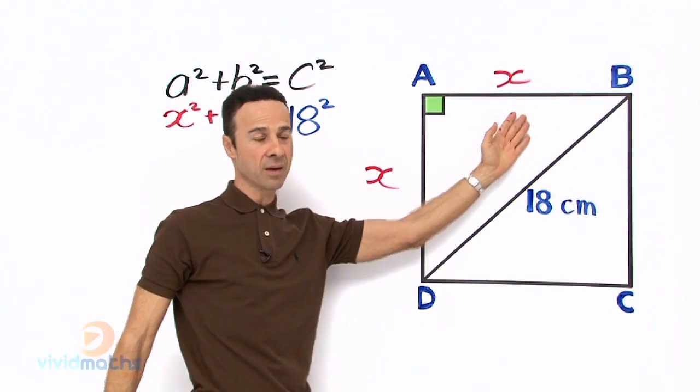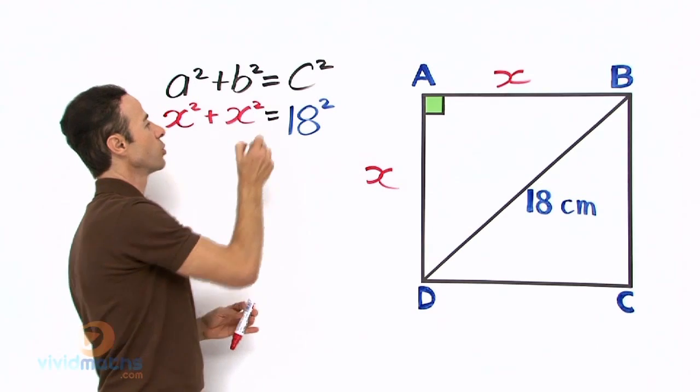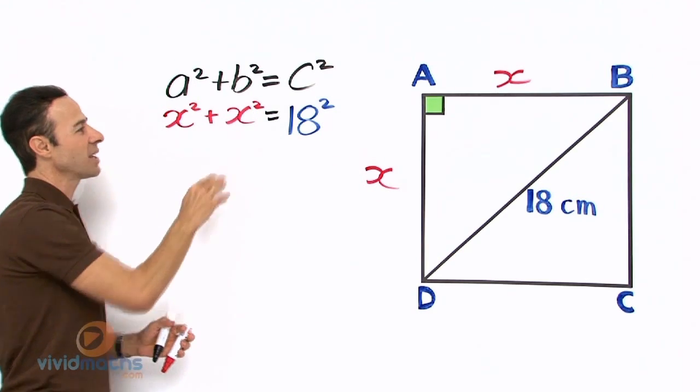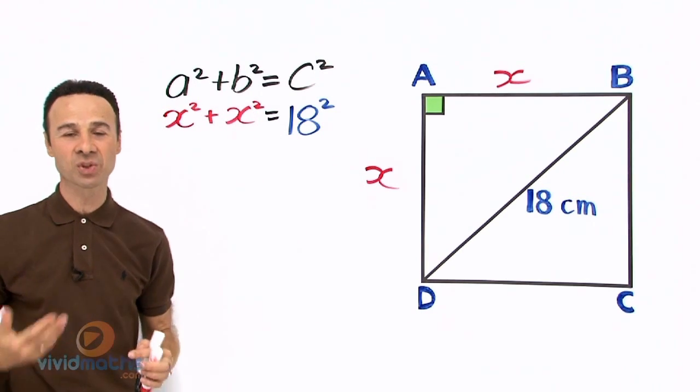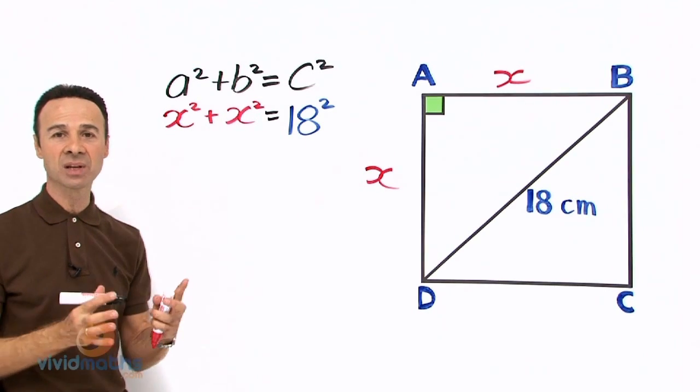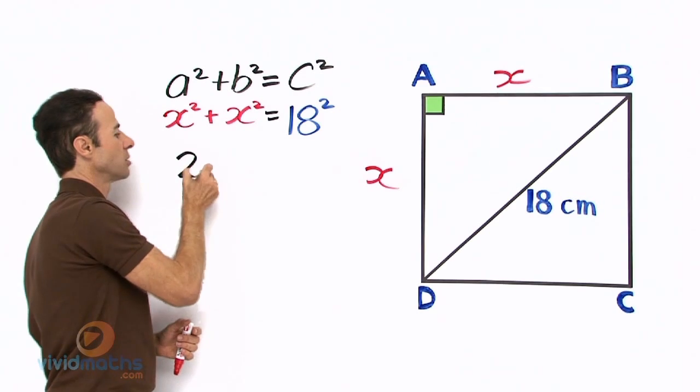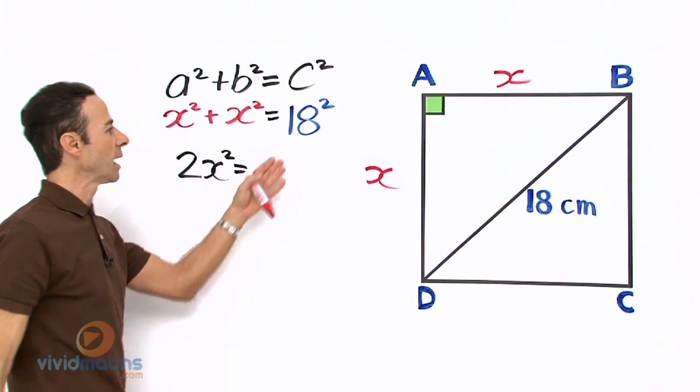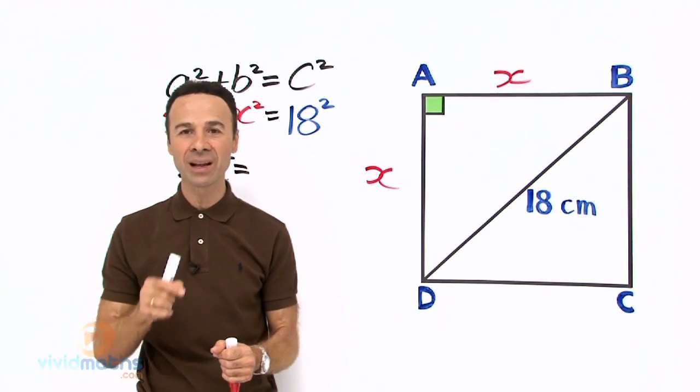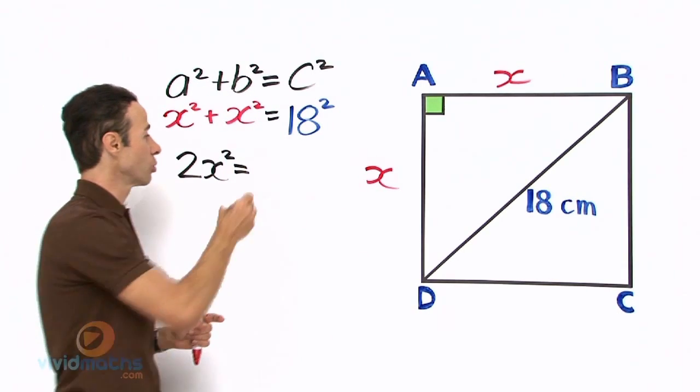Let's go to solve this and the first place we want to do is add up the two x's. Now x² + x² being pronumerals is kind of easy we can add them together and turn them into 2x². So that will be 2x² equals, now we have 18 squared you put that in your calculator I'm just going to check it's actually 324.